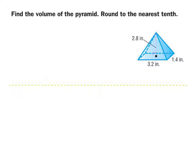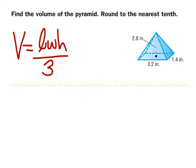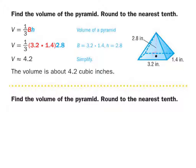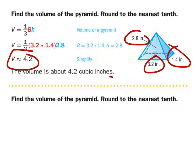Let's look at this example. First we figure out what kind of pyramid this is — rectangular or triangular? The base is rectangular, so we use length times width times height divided by 3. The values are 2.8 times 3.2 times 1.4, all divided by 3, which gives us about 4.2. Since these are labeled in inches and this is volume, the answer is 4.2 cubic inches.